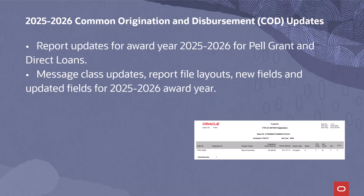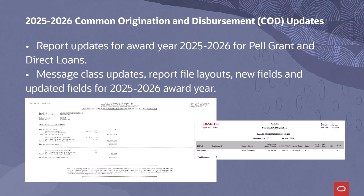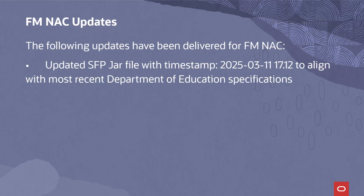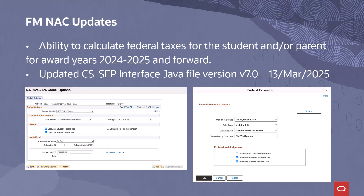Report updates for award year 2025-2026 have been delivered for Pell Grant and direct loans. Message class updates, report file layouts, new fields, and updated fields have been delivered to align with the published specifications for the 2025-26 award year. For FMNAC, an updated SFP JAR file with the timestamp 2025-03-11-17-12 has been delivered to align with the most recent specifications published by the Department of Education, along with the ability to calculate federal taxes for the student and/or parent for award years 2024-2025 and forward. An updated CS-SFP interface Java file version v7.0 dated 13 March 2025 has been delivered to support this functionality.